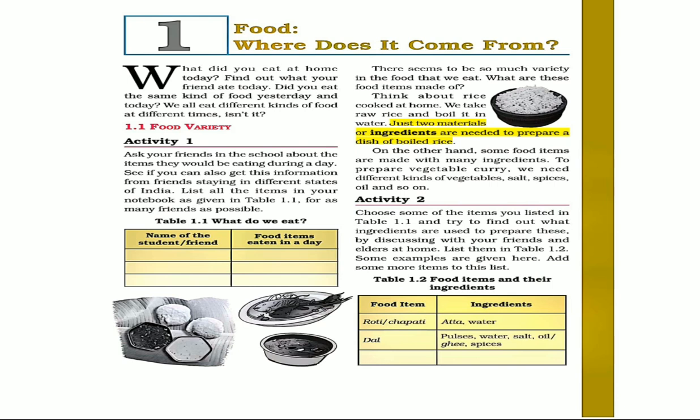We use sunflower oil as well. We have coconut oil, and the oil is extracted from it. For example, sunflower oil — these are plant products. In the case of ghee, it comes from animals.